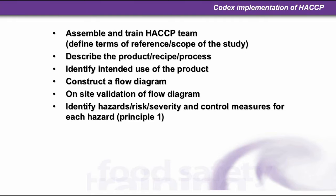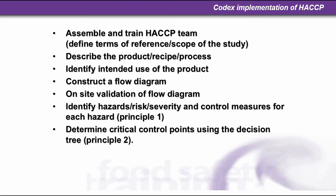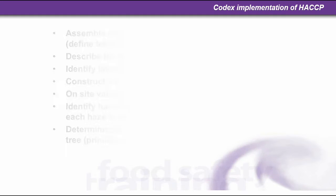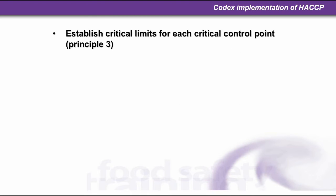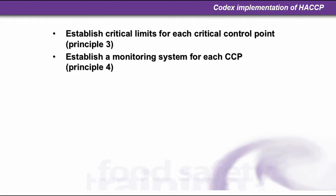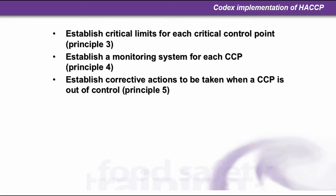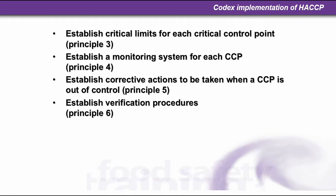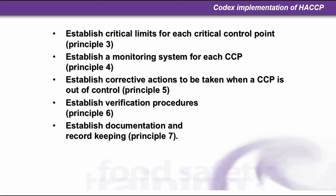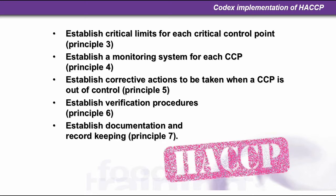Then we go on to the seven steps of HACCP. Principle one: identify the hazards, the risk, severity, and control measures for each hazard. Principle two: determine critical control points using the decision tree. Principle three: establish critical limits for each critical control point. Principle four: establish a monitoring system for each critical control point. Principle five: establish corrective actions to be taken when a critical control point is out of control. Principle six: establish verification procedures. Principle seven: establish documentation and record keeping.